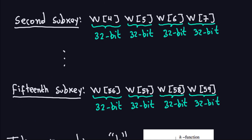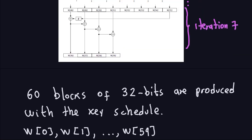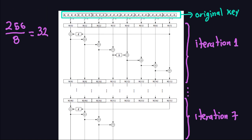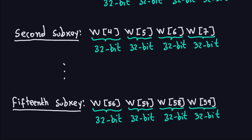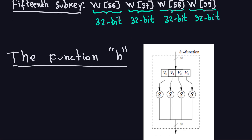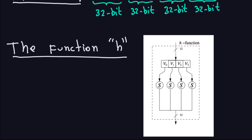There is one more thing to discuss: the function h, which appears in all iterations except the last one. From iteration one to iteration six, we have two functions, g and h. The g function is already described in detail in previous videos, but h is not. The h function appears in the middle part of iterations one through six but not in the last iteration. So what is the function h doing? Let's scroll down and see.